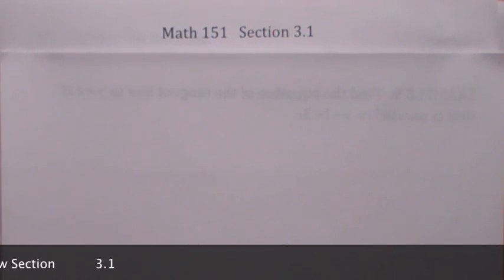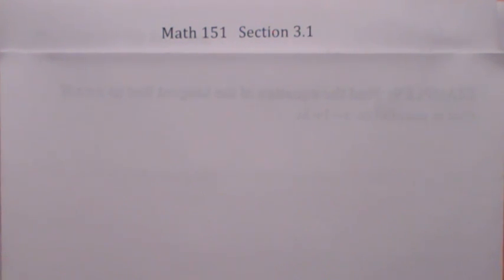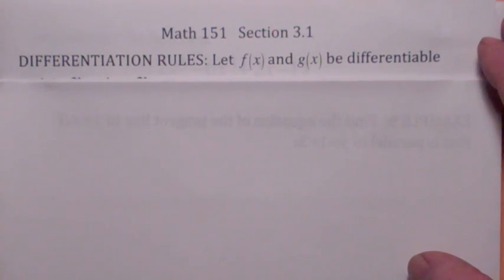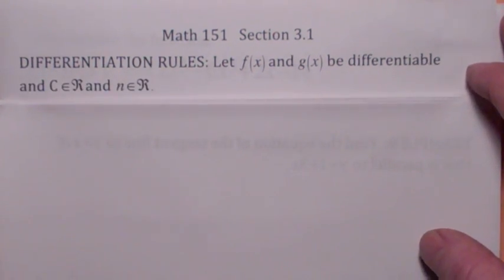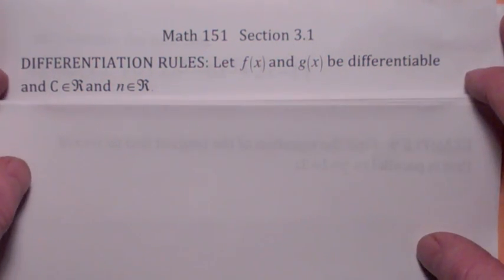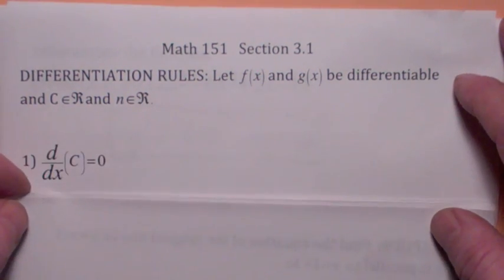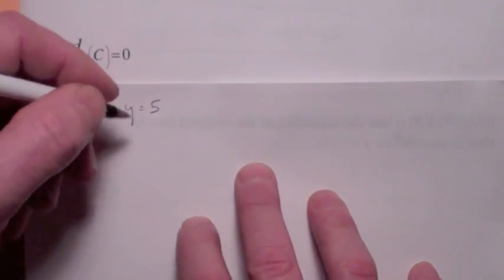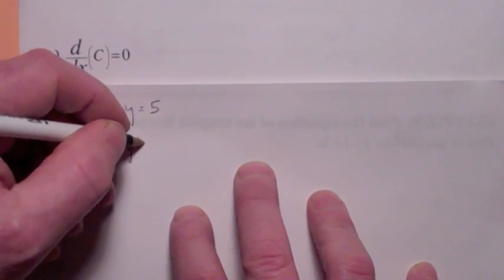Welcome to chapter 3, where life gets easier for a while because we're going to learn some differentiation rules that are going to make finding derivatives a lot easier. Let's assume that we have two functions that are differentiable — that means the derivatives exist — and let's suppose that c and n are any real numbers. The first rule says that the derivative of a constant function is zero. That should make a lot of sense if you look at the graph of y equals 5, for example — it's a horizontal line, so you'd expect the derivative to be zero.